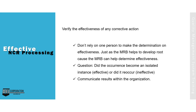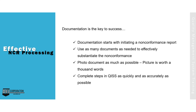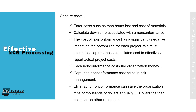Documentation is the key to success. Documentation starts with initiating a non-conformance report. Use as many documents as needed to effectively substantiate the non-conformance. Photo document as much as possible — a picture is worth a thousand words. Complete steps in QISS as quickly and as accurately as possible. Capture costs such as man-hours lost and cost of materials. Calculate downtime associated with a non-conformance. The cost of non-conformance has a significantly negative impact on the bottom line for each project. We must accurately capture those associated costs to effectively report actual project costs. Each non-conformance costs the organization money; capturing non-conformance cost helps in risk management. Eliminating non-conformance can save the organization tens of thousands of dollars annually — dollars that can be spent on other resources.